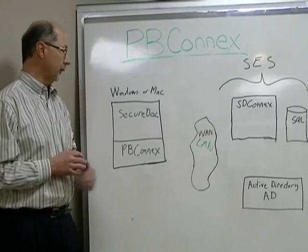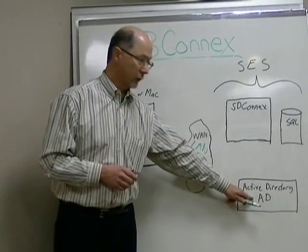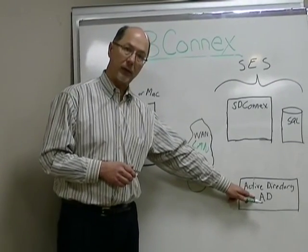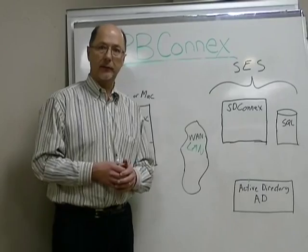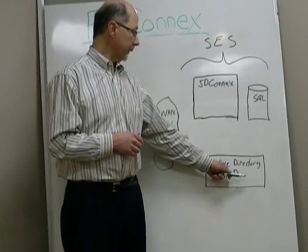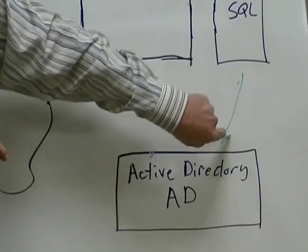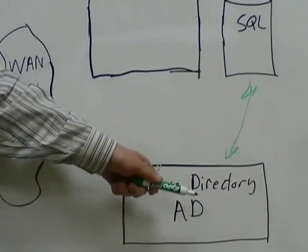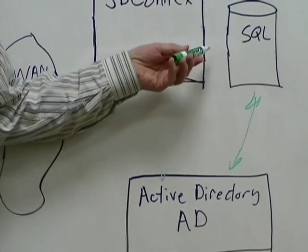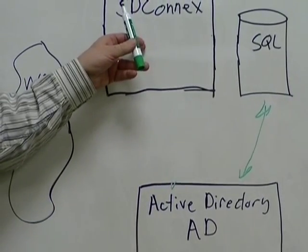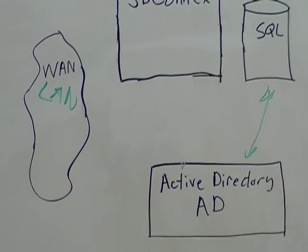Now, with PB Connects, when the new user joins the organization, as is typical, the Active Directory administrator would create an account for them in Active Directory and add them to an organizational unit. With PB Connects, that's it. An AD sync process synchronizes those users with our SQL database. Those users will already be in certain Active Directory groups, and based on whether they are in the correct group, SD Connects will know whether a particular user should be authorized to connect to and boot up a particular computer.